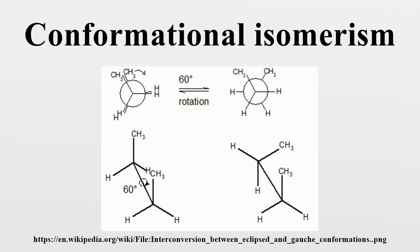The short timescale of interconversion precludes the separation of conformational isomers in many cases. Atropisomers are conformational isomers which can be separated due to restricted rotation. Protein folding also generates stable conformational isomers which can be observed. The Karplus equation relates the dihedral angle of vicinal protons to their J coupling constants as measured by NMR, and aids in the elucidation of protein folding as well as the conformations of other rigid aliphatic molecules.